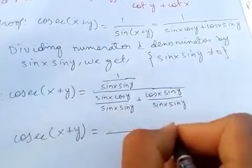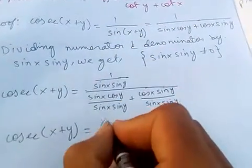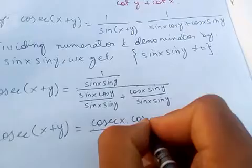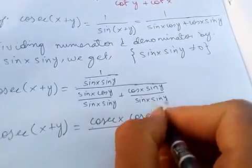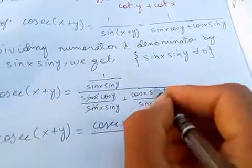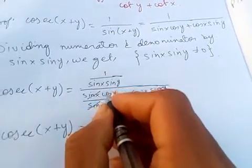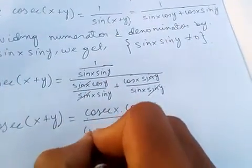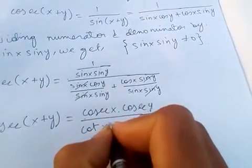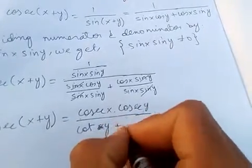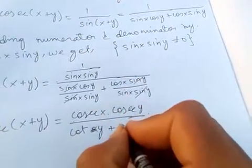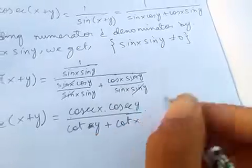So let's cancel. We know that one over sine is cosec, just cosec x cosec y. And this gets canceled, this and this get canceled. So cos by sine is cot, cot y, plus we know cos by sine is cot, cot of x.